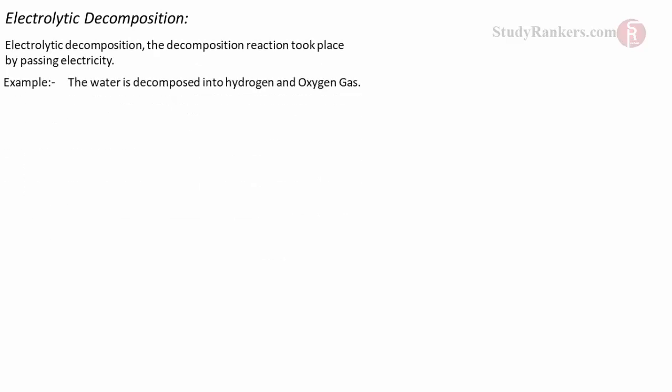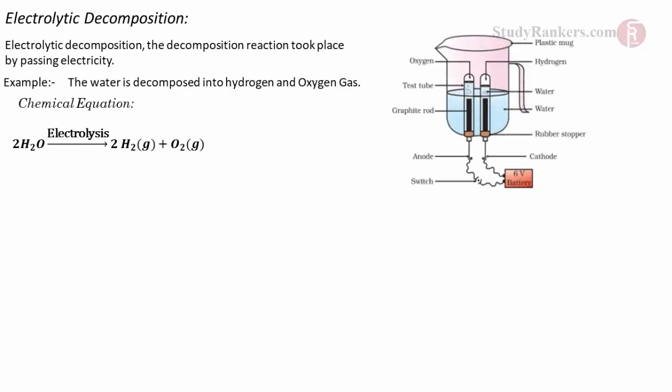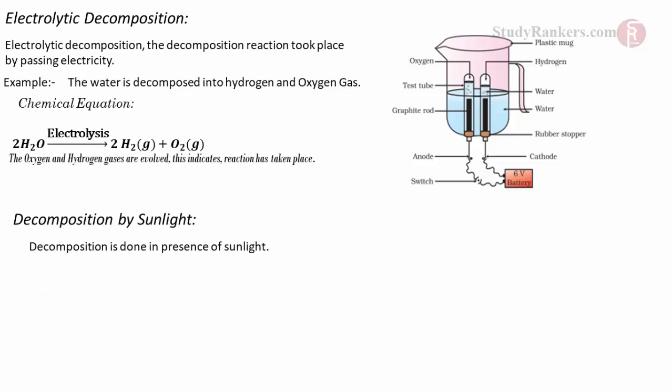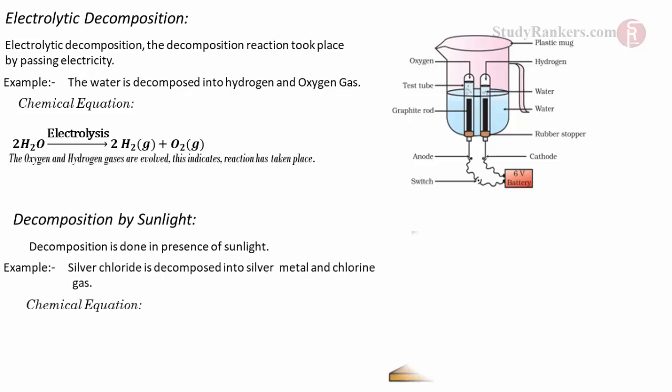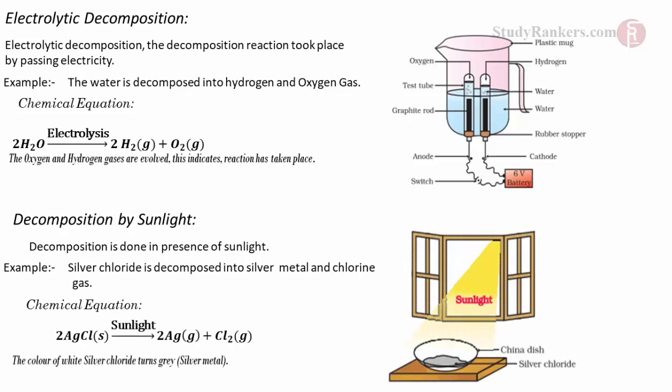The decomposition done by passing electricity is known as electrolytic decomposition. Water is decomposed into hydrogen and oxygen gas. Sunlight decomposition is a decomposition reaction taking place in the presence of sunlight: silver chloride is decomposed into silver metal and chlorine gas. 2AgCl(s) in the presence of sunlight gives 2Ag(s) and Cl2(g). The white color of silver chloride turns gray due to formation of silver metal. This reaction is used in black and white photography.